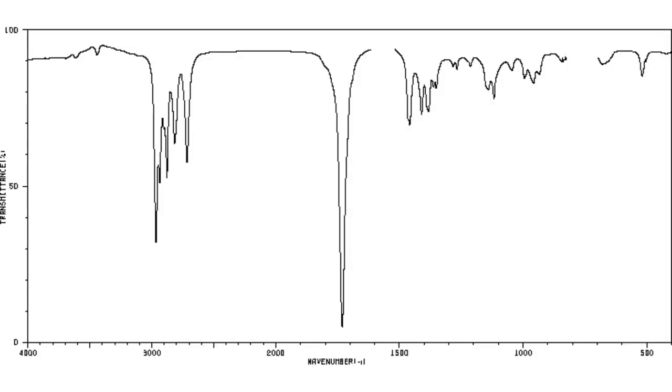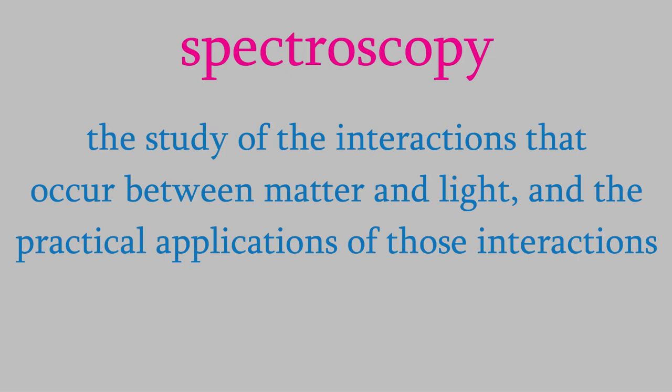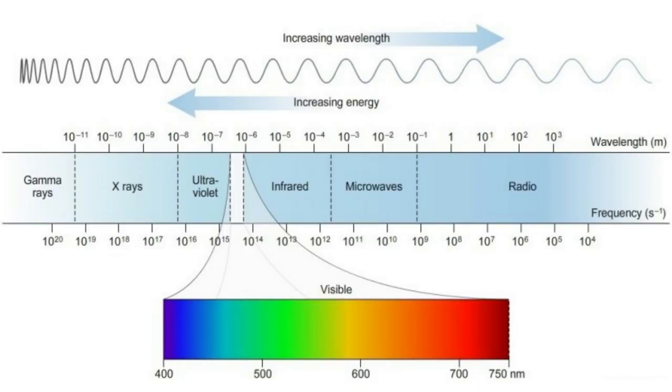As you probably know, spectroscopy is the study of the interactions that occur between matter and light, and how we can use those interactions to identify molecules and understand chemical processes like reactions. To start off our discussion, let's remember a few things about light waves and the electromagnetic spectrum. Here's a picture of the spectrum. As you might remember from your physics courses, visible light is just a small portion of the total spectrum.